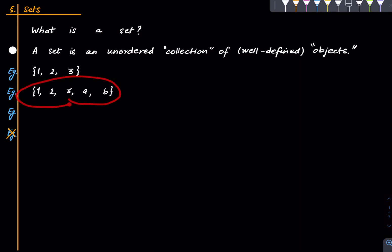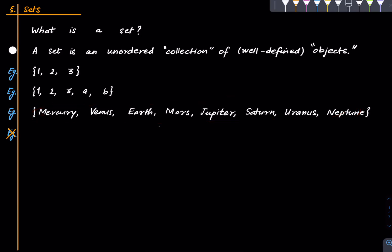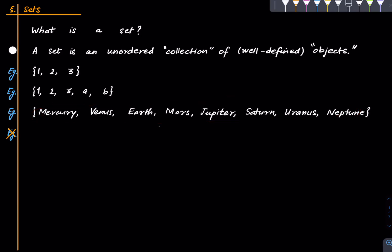Here is another set: the first three natural numbers and the first two letters of the English alphabet. And this is another set — the set of all planets in the solar system: Mercury, Venus, Earth, Mars, Jupiter, Saturn, Uranus and Neptune. Pluto was kicked out of this list some years ago. When I was a child Pluto was included, but now it's not, as far as I know. So there are only eight entries here.